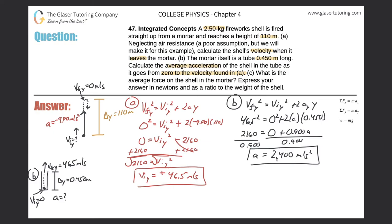Letter C: what is the average force on the shell in the mortar? We need to draw a free body diagram. When considering the forces acting on the shell, there are two forces. There's always a force due to gravity acting straight down on the object — that's the weight. The formula for weight is W equals mg.